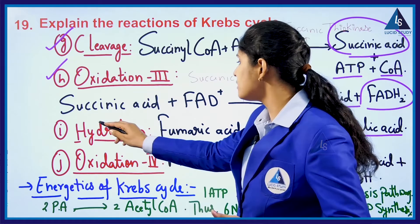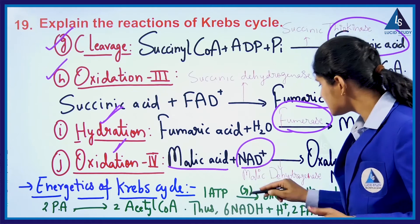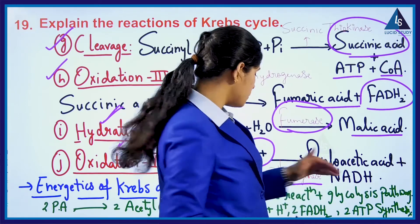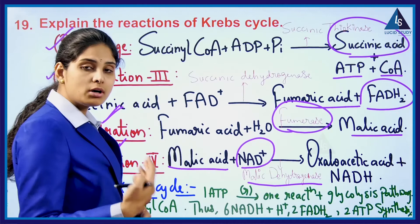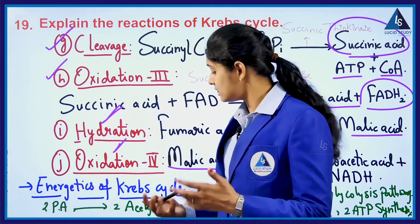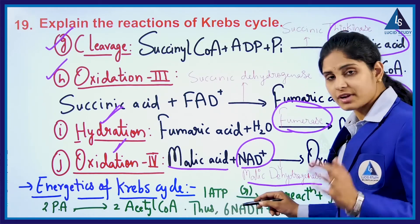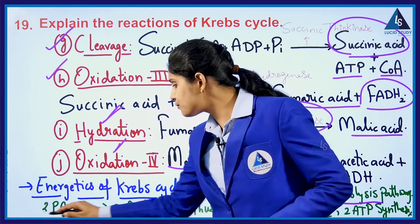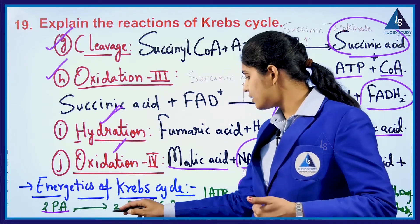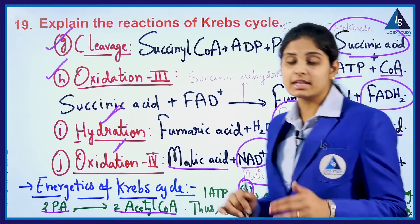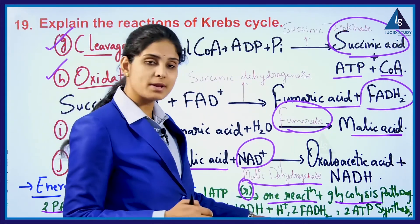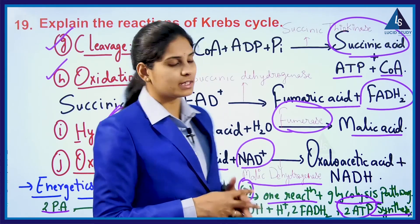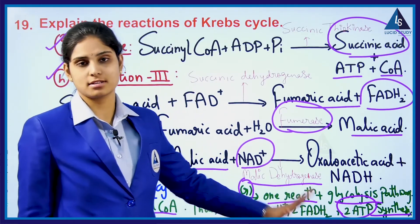Oxidation 4 is where malic acid with NAD+ under malate dehydrogenase helps the formation of oxaloacetic acid and NADH. Finally, looking at the energetics of Krebs cycle: from two pyruvic acids formed in glycolysis, two acetyl-CoA molecules are produced. At the end of the Krebs cycle we get six molecules of NADH plus H+, two FADH2, and two ATP molecules synthesized.